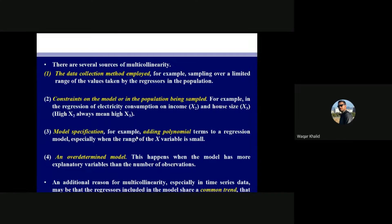The second case: when you are selecting a model but putting constraints on it. For example, you have three variables — electricity consumption as your dependent variable, income (x2) and household size (x3) as independent variables. You are putting a physical constraint in the population, such as that families with higher incomes generally have larger homes than families with lower income.